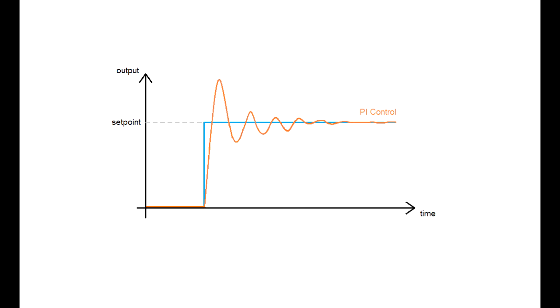So adding the derivative term, we can reduce the overshoots as such. This is the main benefit of using all three terms in a PID controller.